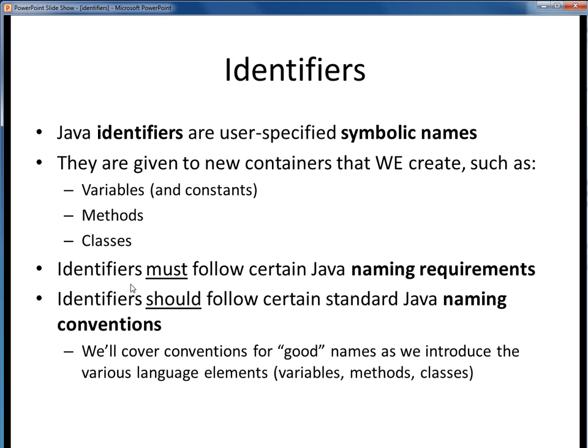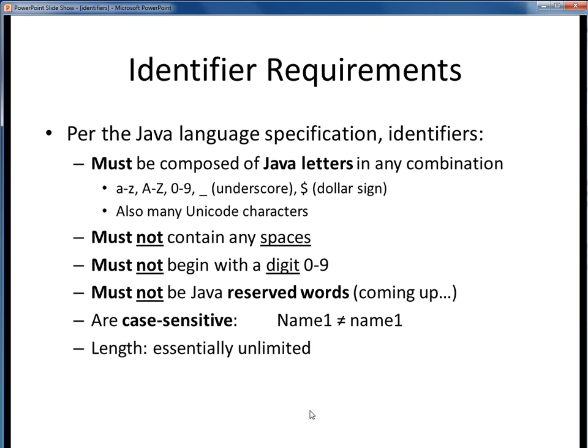Identifiers have certain restrictions on their names. There are certain naming requirements that must be followed per the Java language, and then there are certain well-established naming conventions that should be followed. We'll talk about these well-established conventions for good names as we introduce those various other language elements. First of all, here is a list of requirements that our identifiers must follow per the Java language specification.